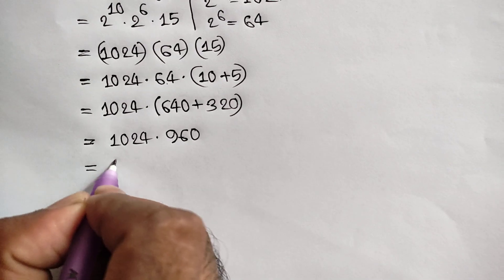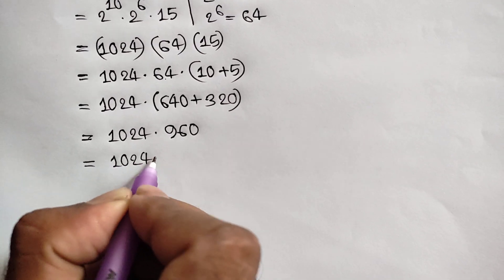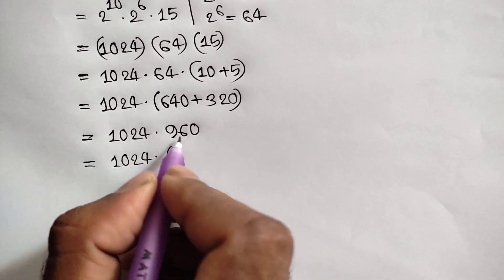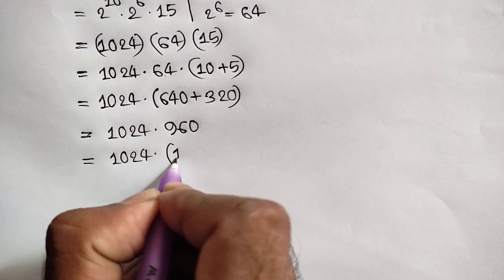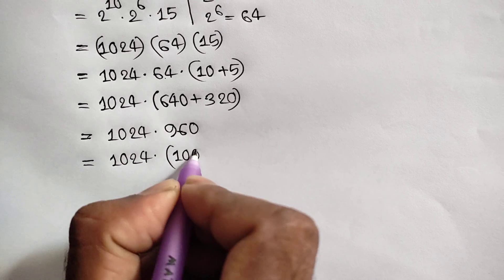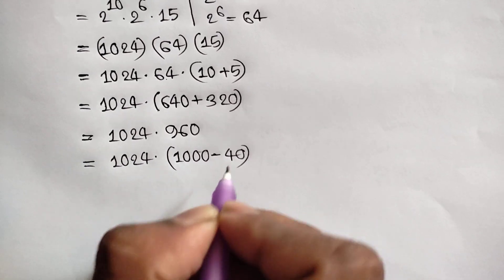So 960 is equal to 1024 times 960, and 960 can be written as 1000 minus 40.